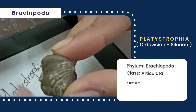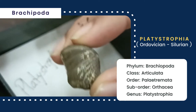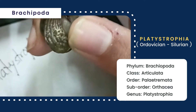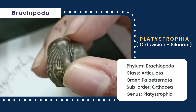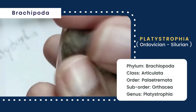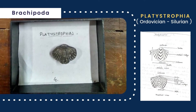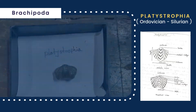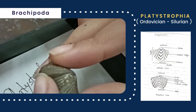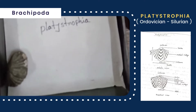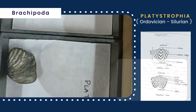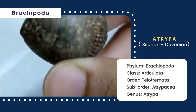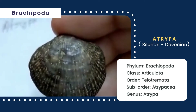Now you can see Platystrophia on your screen. Its shell is spiriferoid in form and biconvex, with both valves equal in size. The hinge line is long and strong with a beak. The brachial valve bears a prominent fold where the pedicle valve has a corresponding sulcus. The surface of the shell is ornamented with prominent radial ribs and growth lines.